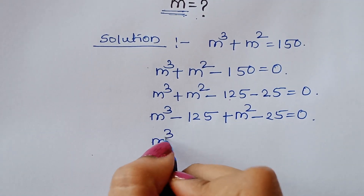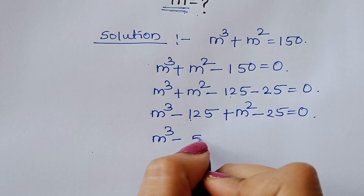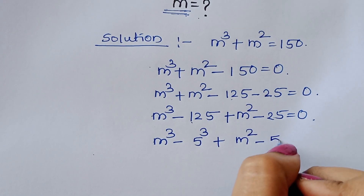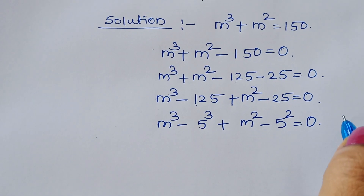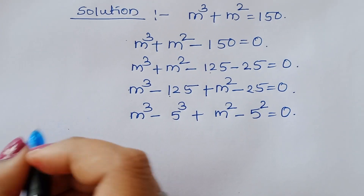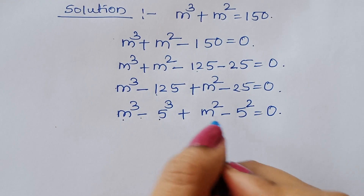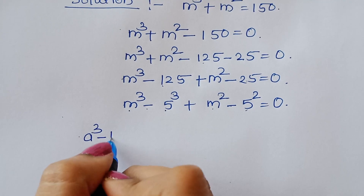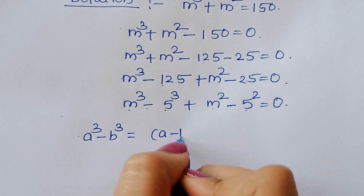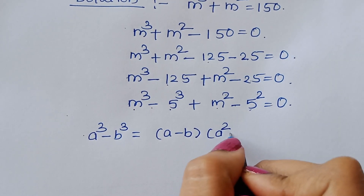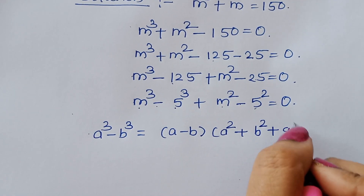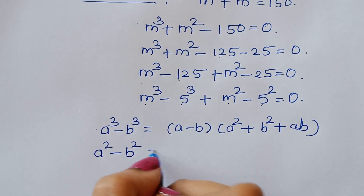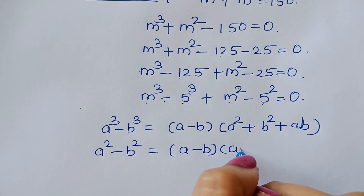Now m cube minus 125 is m cube minus cube of 5, and m square minus square of 5 is equal to 0. This is in the form a cube minus b cube and a square minus b square. The formula for a cube minus b cube is a minus b times a square plus b square plus ab, and a square minus b square is equal to a minus b times a plus b.